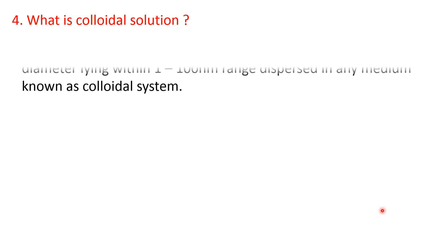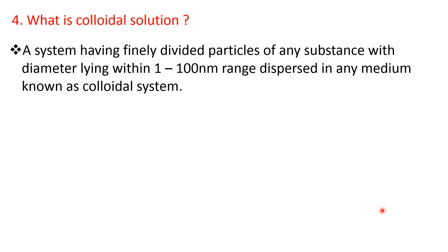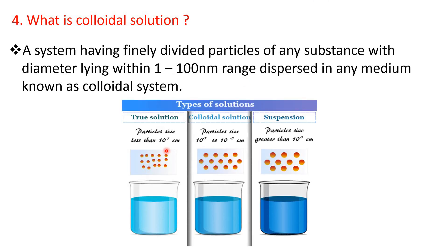Next question: what is colloidal solution? Any system having fine particles of any substance of diameter 1 to 100 nanometer range when dispersed in a medium is known as the colloidal system. If the size of the particle is less than 1 nanometer, then true solution is formed. Between 1 to 100 nanometer gives colloidal solution, and more than 100 nanometer forms suspension.